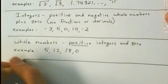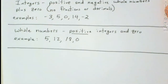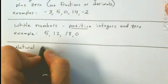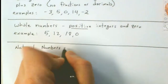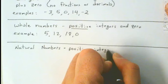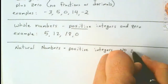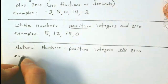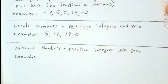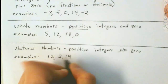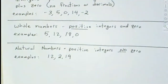Finally, we have the natural numbers, sometimes called the counting numbers. Our textbook calls them natural numbers, so that's what we'll use. These are just positive integers — no zero. Zero is not a natural number. Examples: 12, 2, 19. No fractions, no decimals, zero is not a natural number, and they've got to be positive.